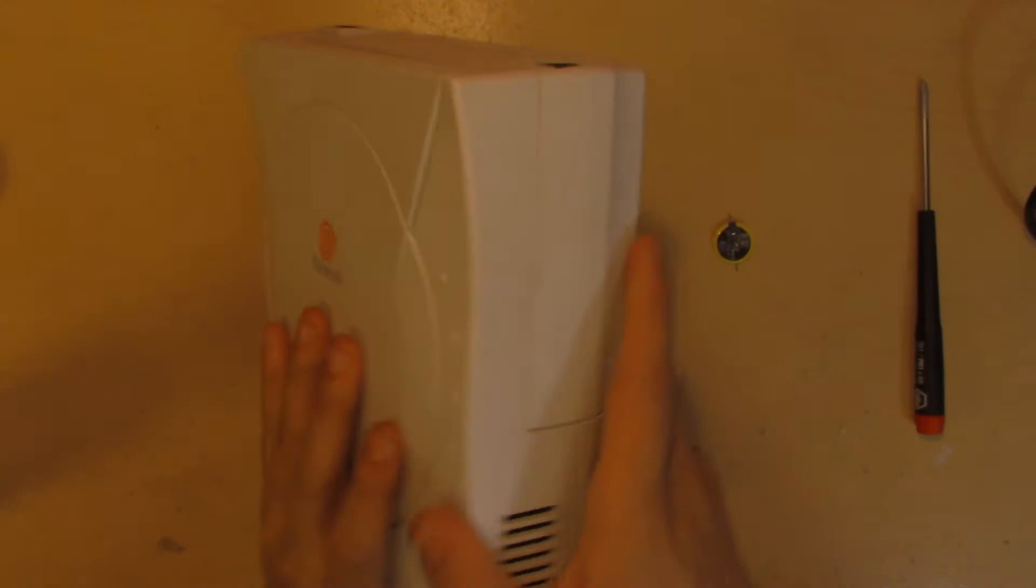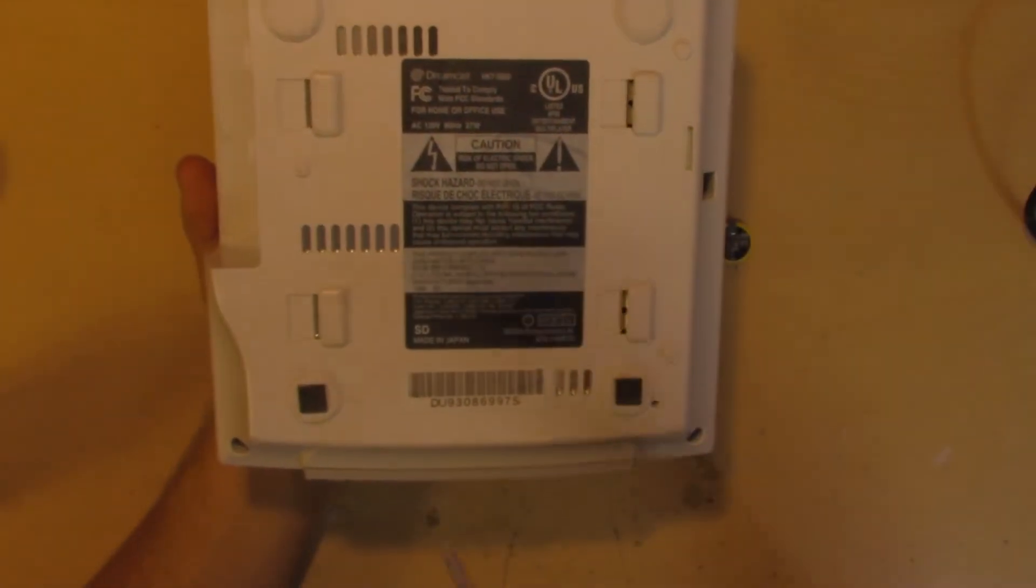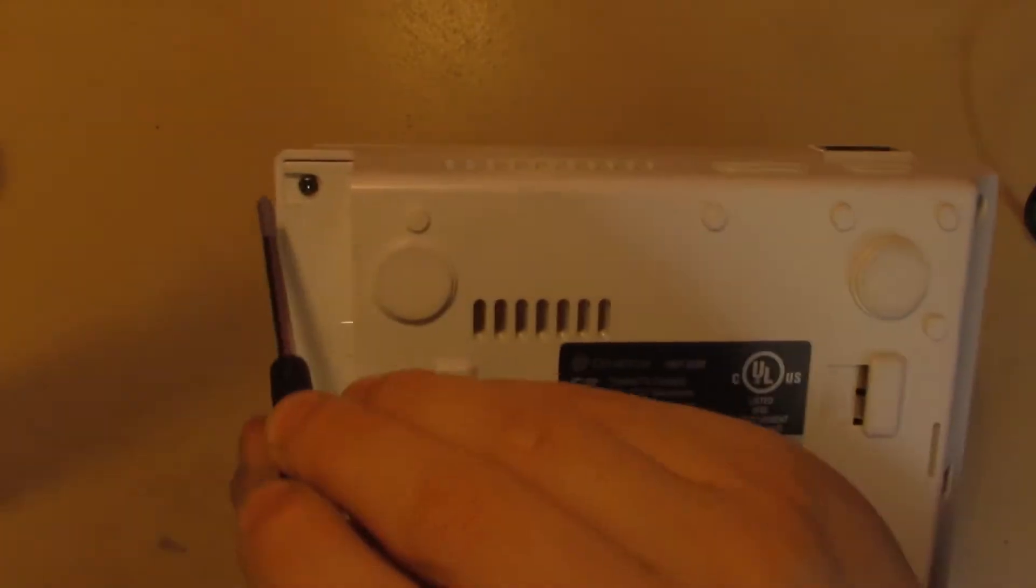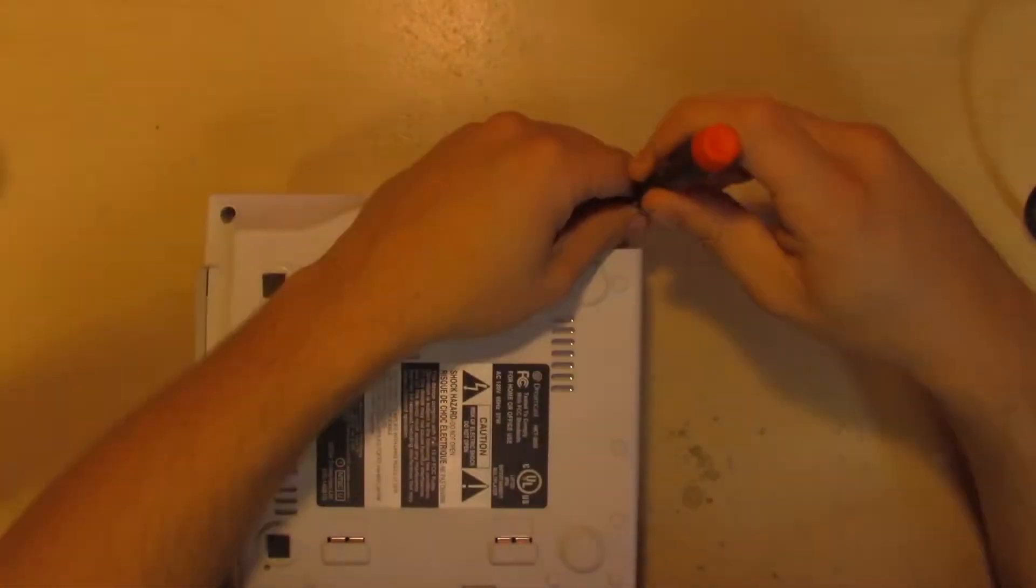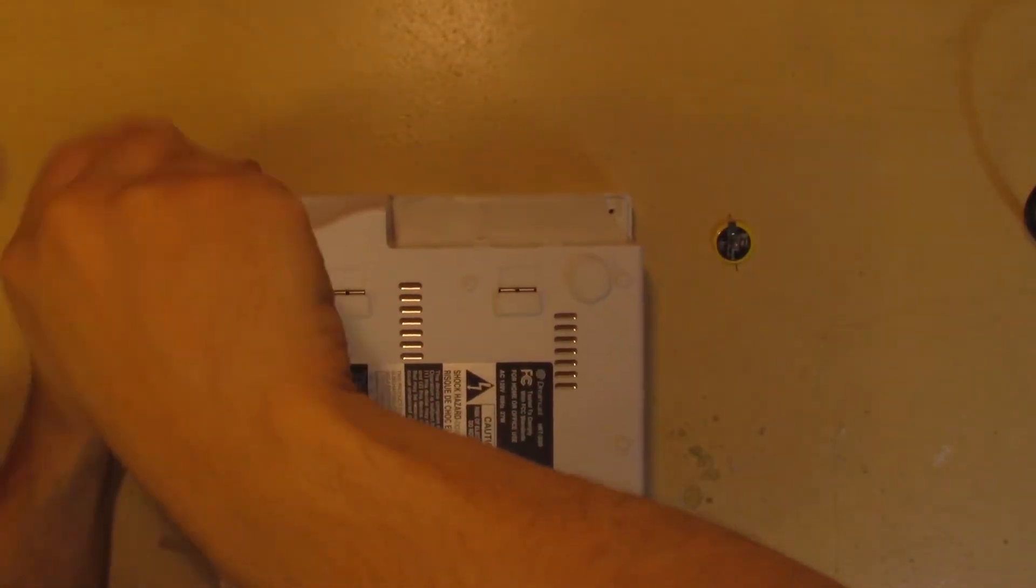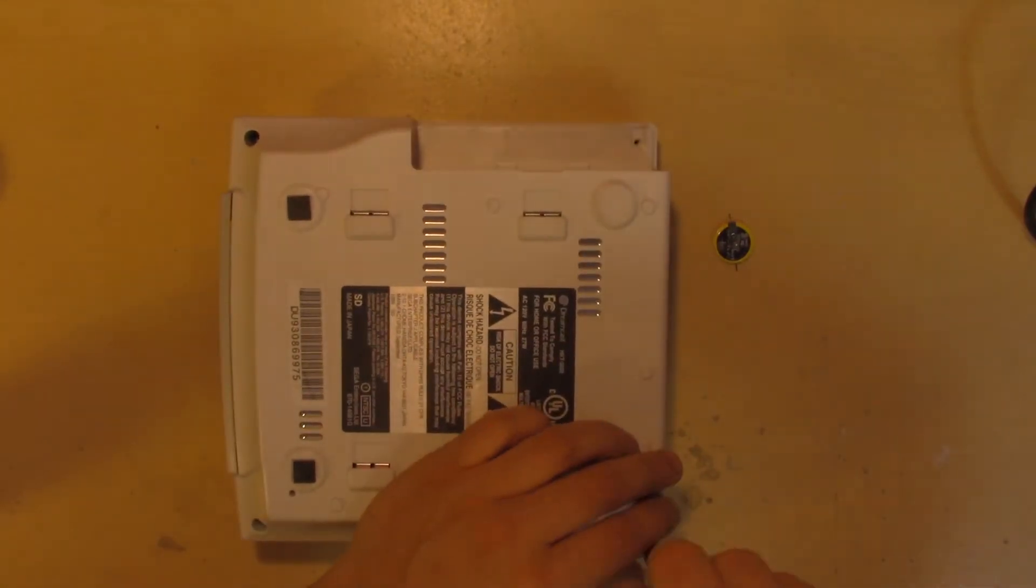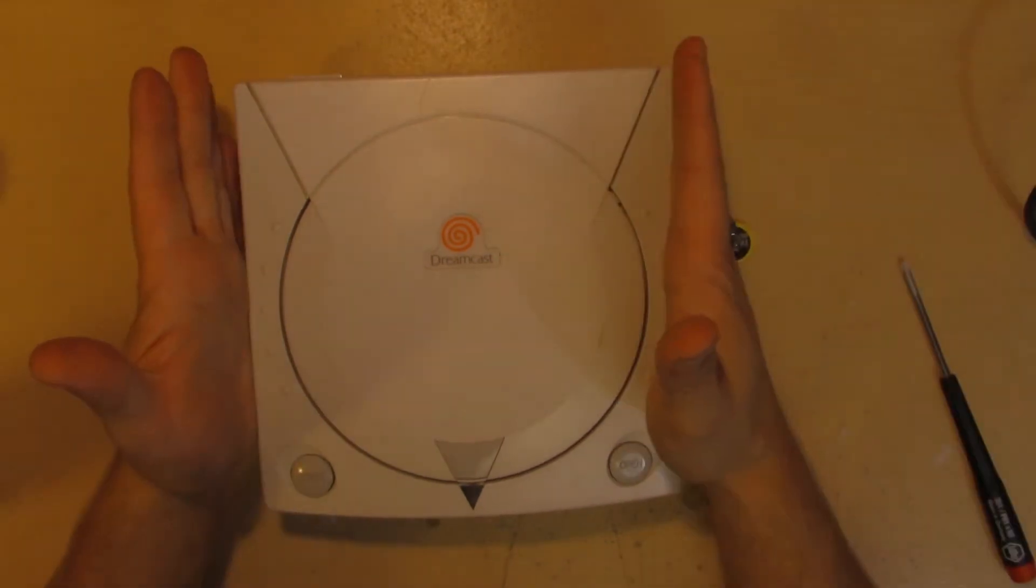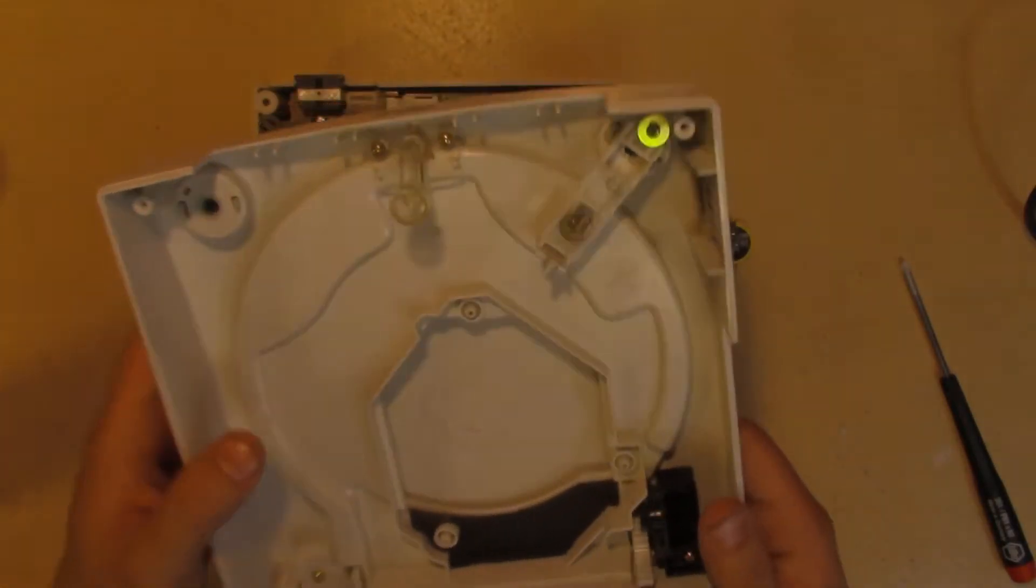So, first let's get started by removing the modem. Just pop that right out. There's only 4 screws on here. Very easy. 1, 2, 3, and 4. Let's just remove those real quick. Once you've got your screws out, you can just grab the sides and just lift upwards to pull the plastic top off. Set that aside.